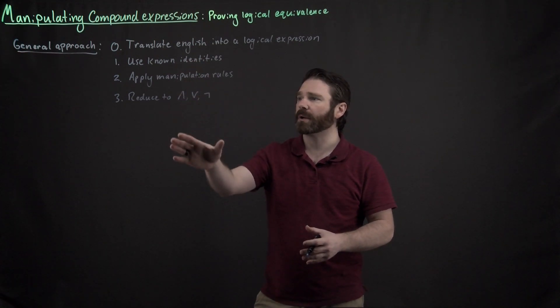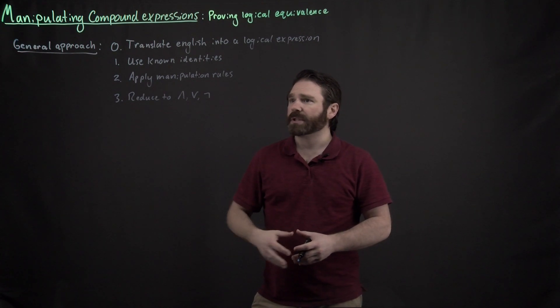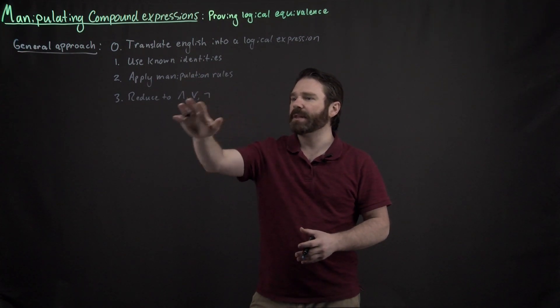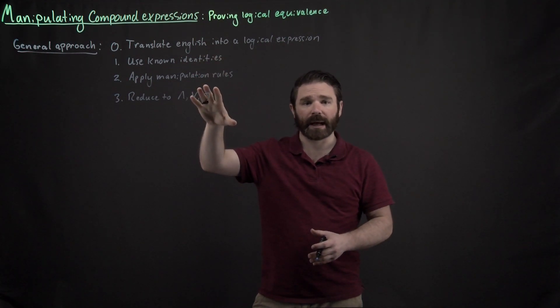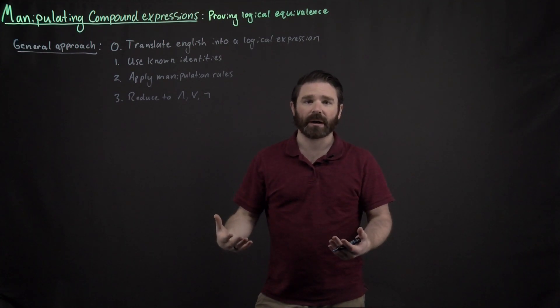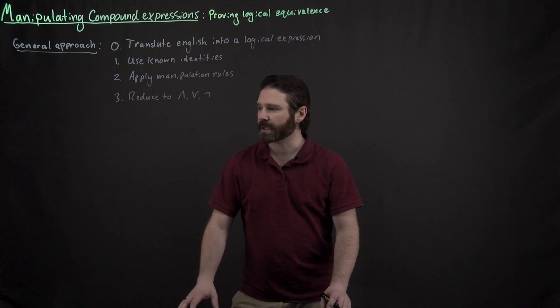Now, of course, these steps right here are not going to be applied in this particular order. You might have to start with some known identity and then reduce it to ands, ors, and nots, and then we apply our manipulation rules. So the order that we're going to actually apply these might change depending on exactly what we're attempting to prove. So let's look at our first example.